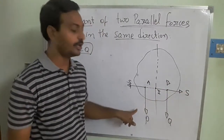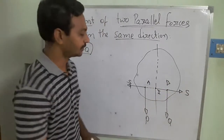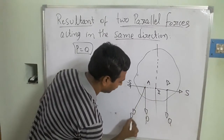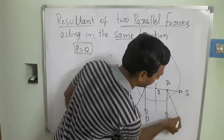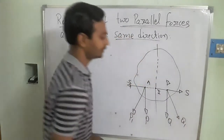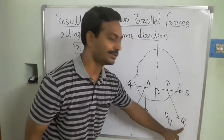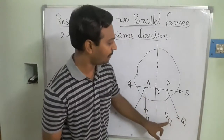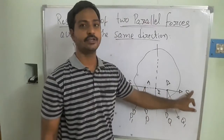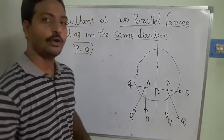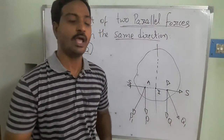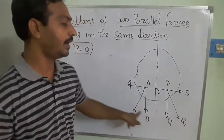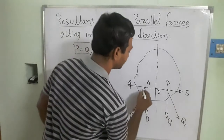Because of the addition of these forces — P with S, and Q with S — resultant components will be generated in the system. I will call these P1 and Q1. P1 is the resultant component of P and S, and Q1 is the resultant component of Q and S. To find the resultant component position, I am taking the projections of the lines of action of P1 and Q1.